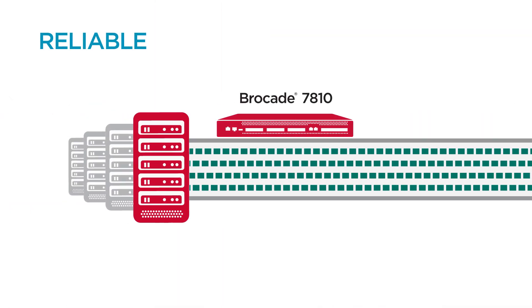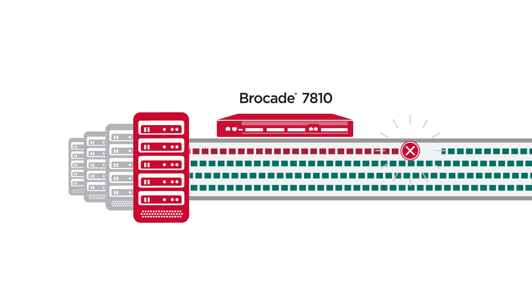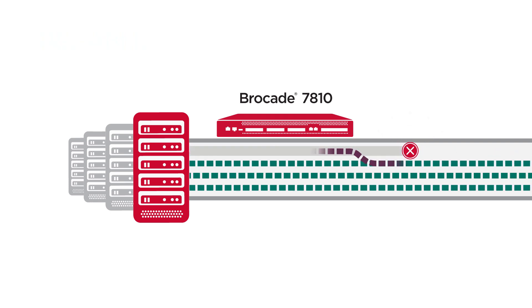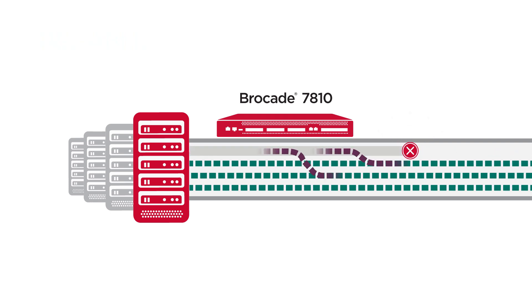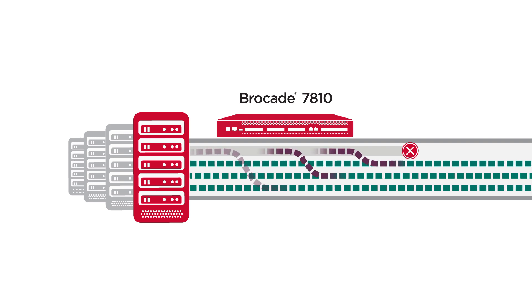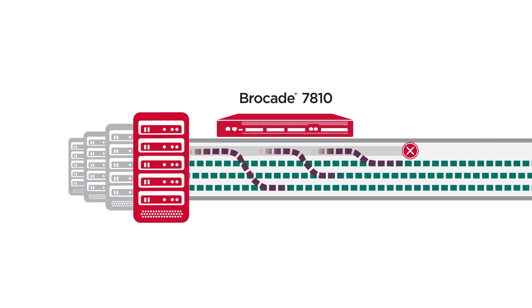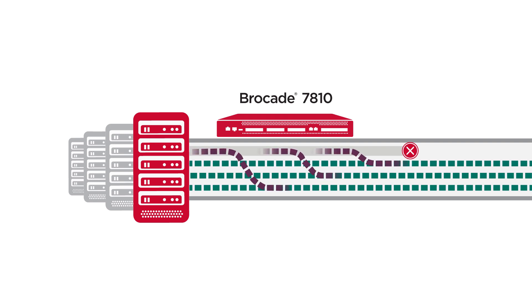The Brocade 7810 handles WAN disruptions automatically by switching disrupted traffic to a good link and rebalancing flows to maintain bandwidth, thus avoiding outages and resyncs.